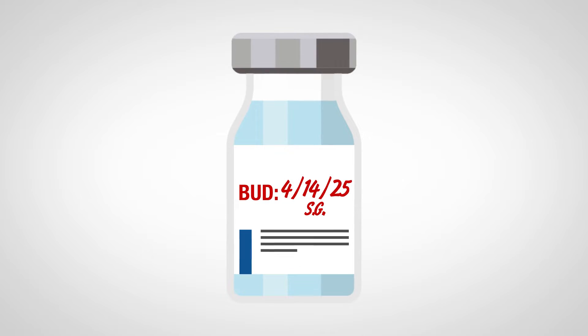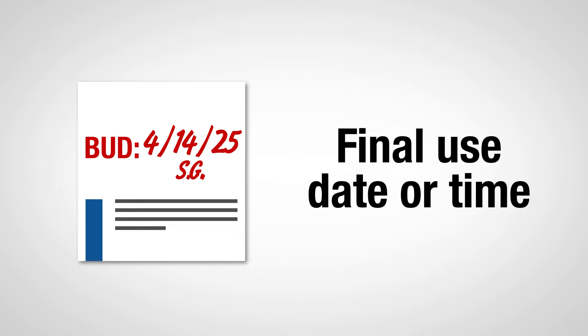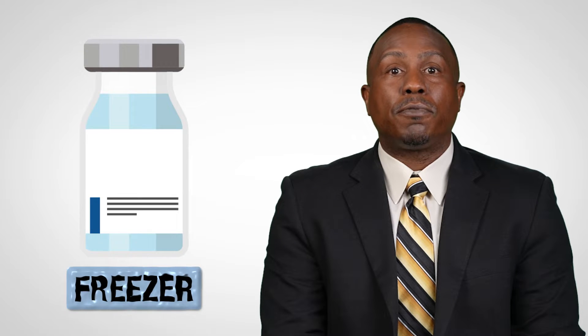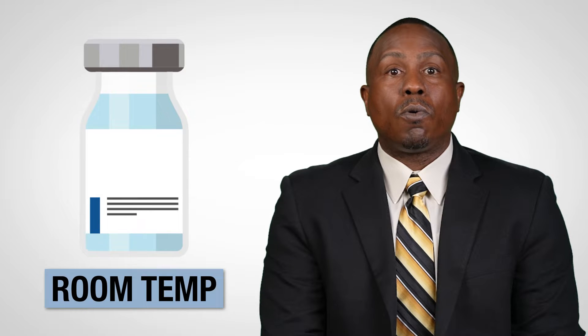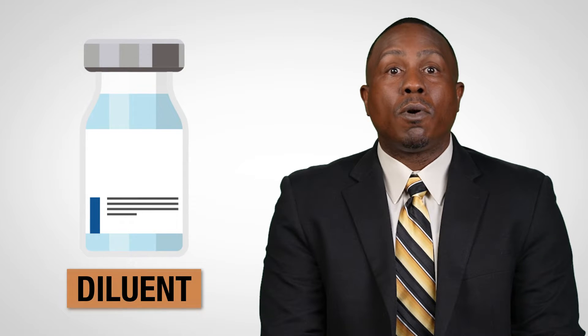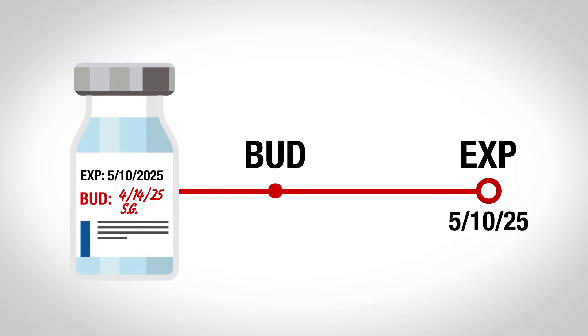The beyond-use date is different from the expiration date. It indicates the final date or time when an altered vaccine can be used. Alteration occurs when a vaccine vial is moved between storage states, such as from a freezer to a refrigerator, or a refrigerator to room temperature, or when it's mixed with a diluent, or when the vial is punctured. For vaccine products that have a BUD, the designated time frame is not always the same and varies between vaccines. The BUD replaces the manufacturer's expiration date, but never extends it.